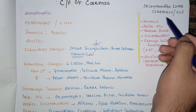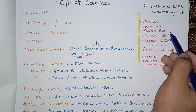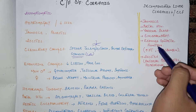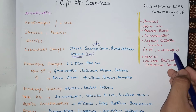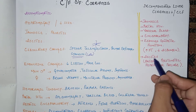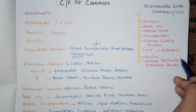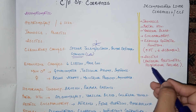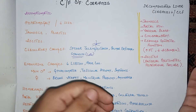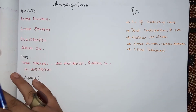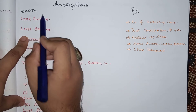Decompensated liver cirrhosis, or chronic liver failure, presents with jaundice, portal hypertension, variceal bleeds, encephalopathy, and reduced synthetic functions (increased prothrombin time and decreased albumin). Other features include ascites, spontaneous bacterial peritonitis (infection of the peritoneum), and hepatorenal failure.